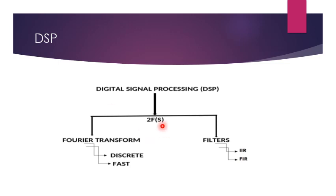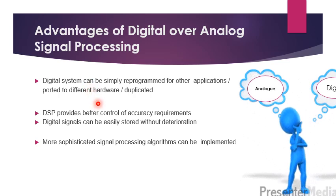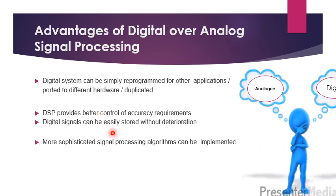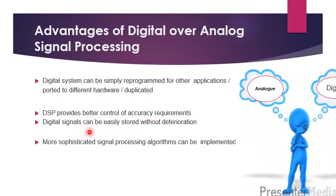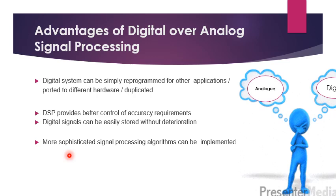In digital signal processing, we have two key F's: Fourier transform (discrete and fast variants) and filters (IIR and FIR). The advantages of digital over analog signal processing include: a digital system can be reprogrammed for other applications, DSP provides better control of accuracy, digital signals can be stored without deterioration, and more sophisticated algorithms can be implemented.